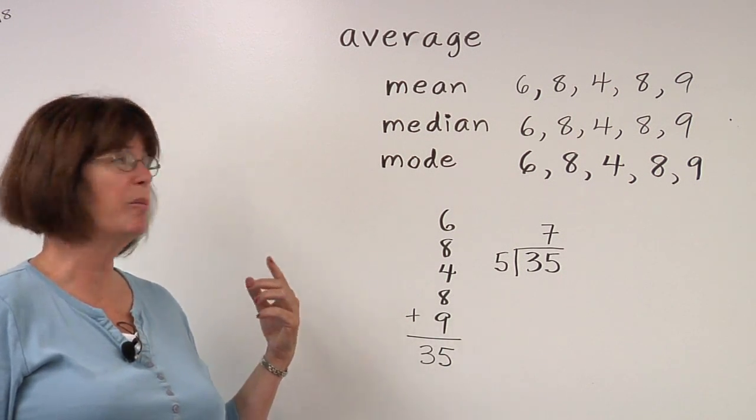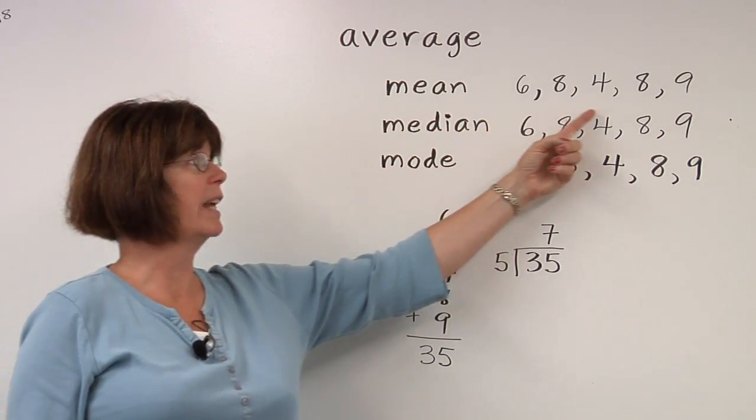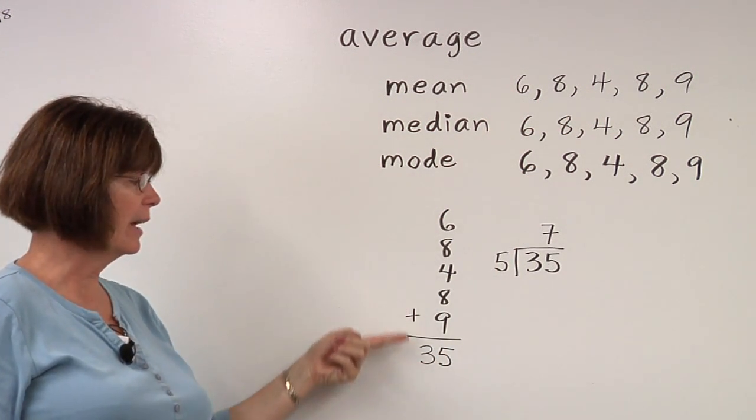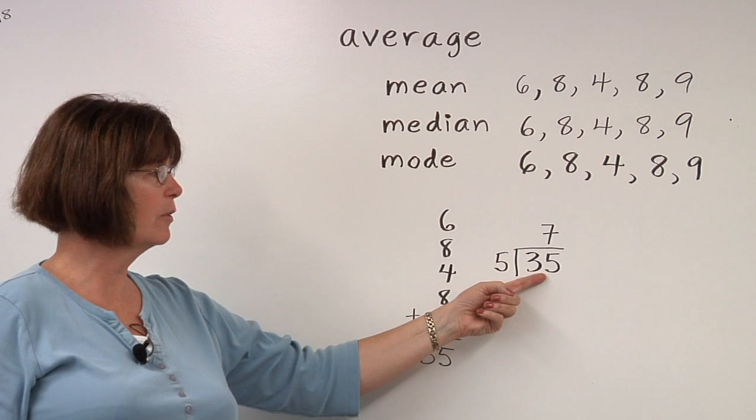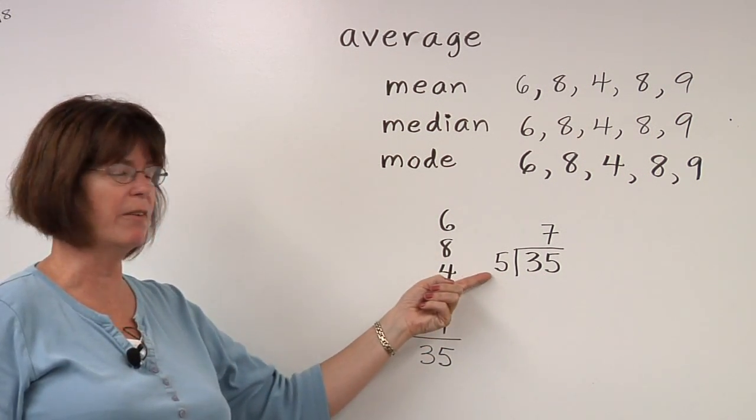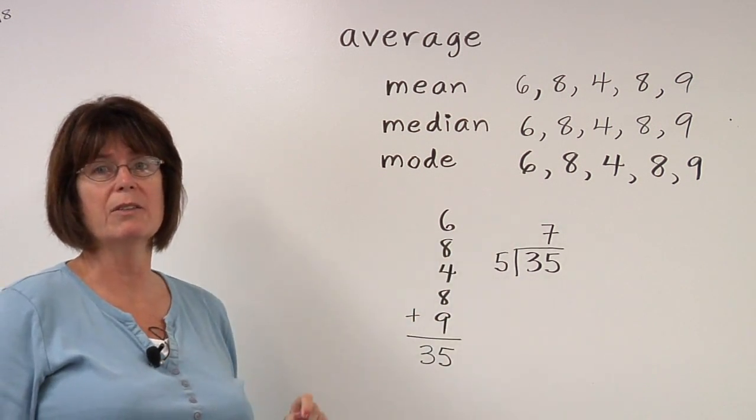So very quickly, in order to calculate the mean of this set of data, you would take the five numbers and add them together, as we've done here, 35. Take the 35 and divide by the number of pieces of data, 5. The mean is 7.